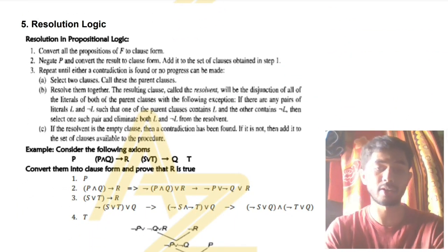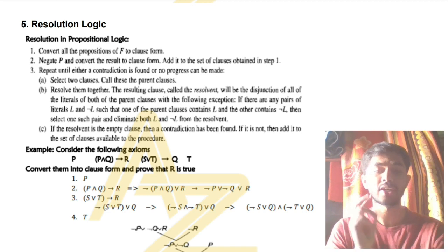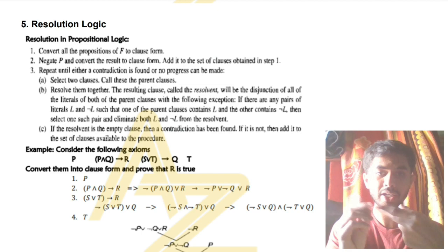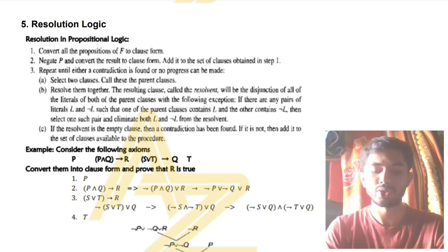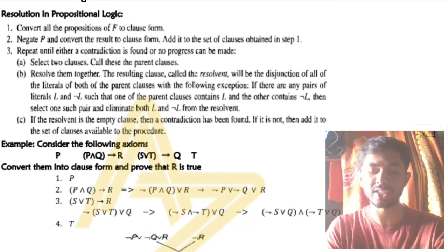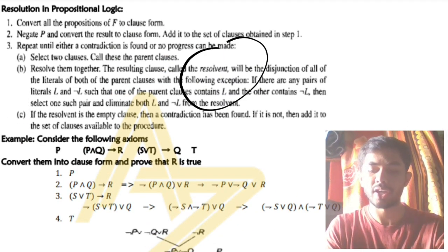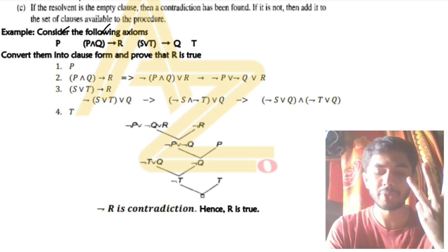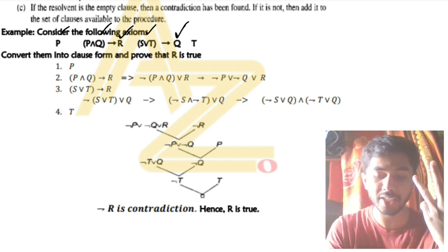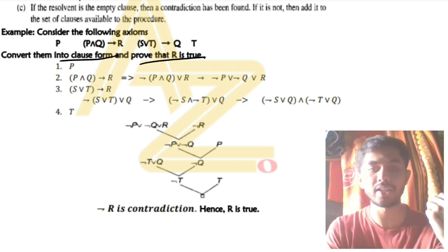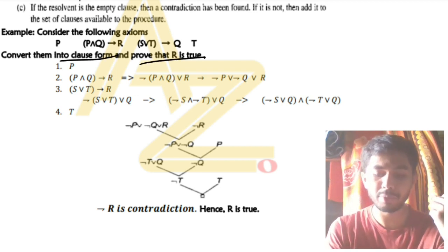Next is resolution logic. In logic there are two kinds: propositional logic and predicate logic. I'll discuss the algorithm and an example for both. For propositional logic, the example has four axioms: p; p and q implies r; s or t implies q; and t. The task is to convert them to clause form and prove that r is true.